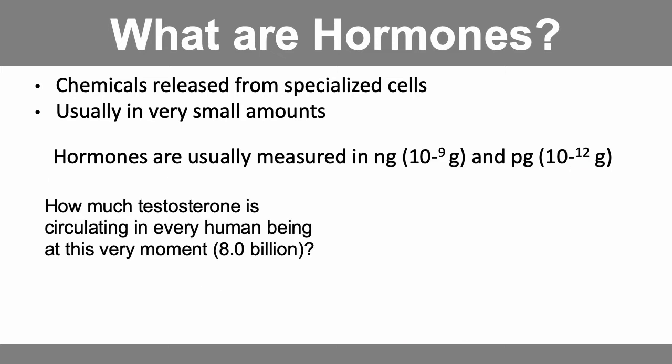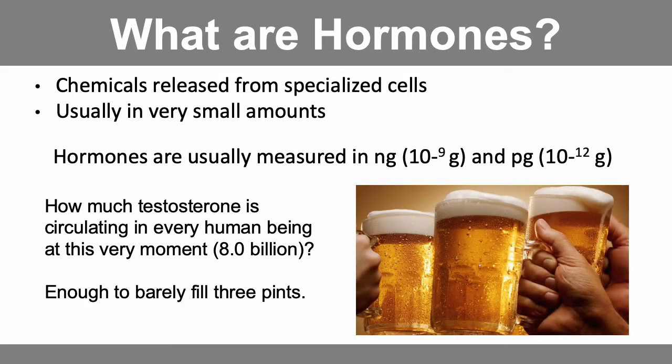Here's another way to conceptualize just how small hormone amounts are. If we could magically take all of the testosterone circulating in every human being right now — about 8 billion people, adult, child, male and female — and put just that hormone in a container, how big would that container be? It's enough to barely fill three pints. This is how much testosterone there is right now in every human being on the planet.